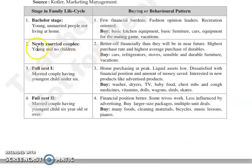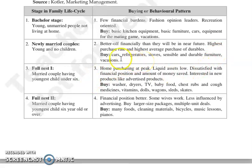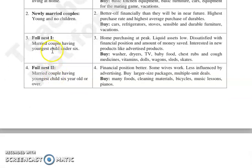The next stage is Newly Married Couple. They have higher purchase rates and buy durable goods. They invest in washers, dryers, TV, and baby food.